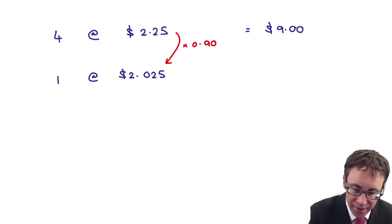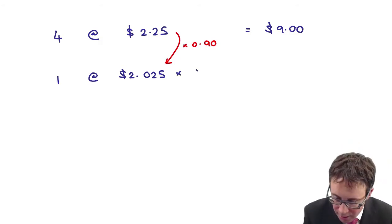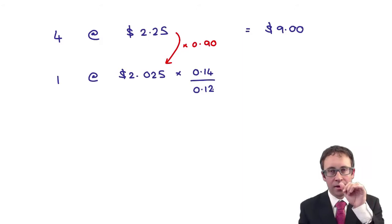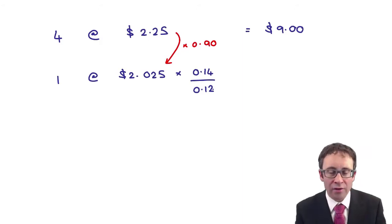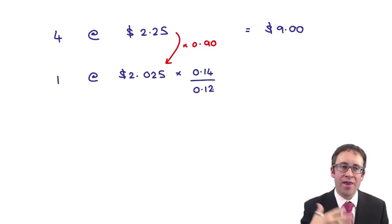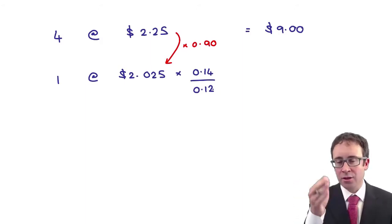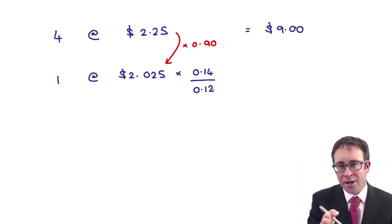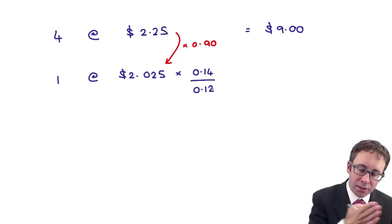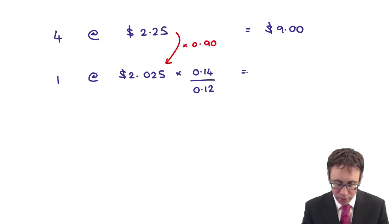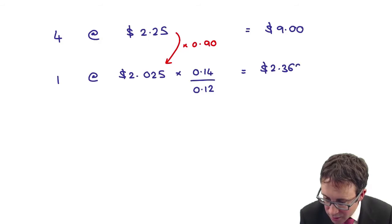So the way in which we're going to factor that in is that that new share is going to generate a return of 14% compared to our previous 12%. So therefore, that money that is invested at $2.025, the finance raised is going to generate that little bit more at 14% compared to what it was based on 12%. So what you're effectively doing is you're taking the 2.025 and dividing it by 12 to work out what each percentage point earns, and then we're now getting 14 percentage points and multiplying it by the 14.